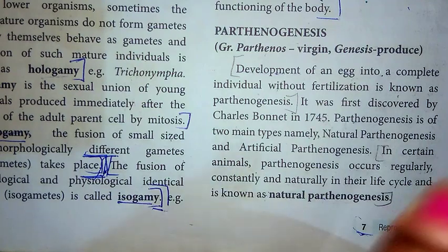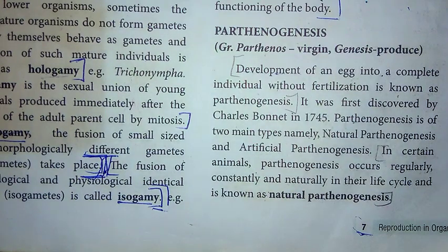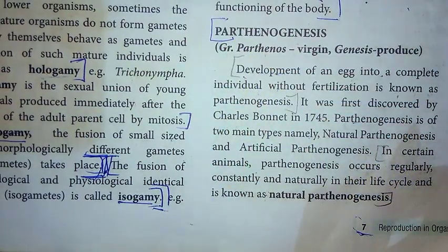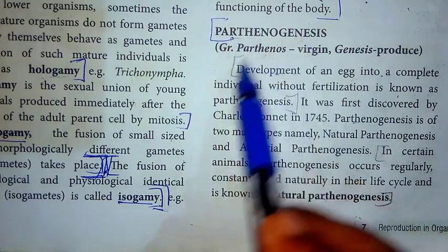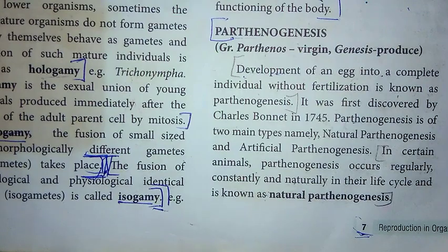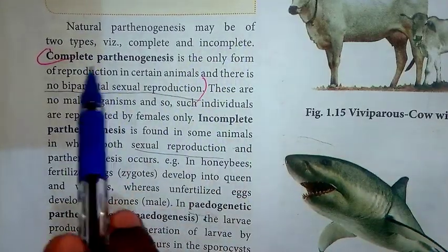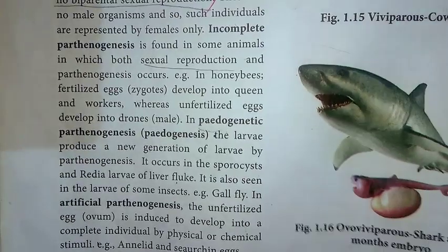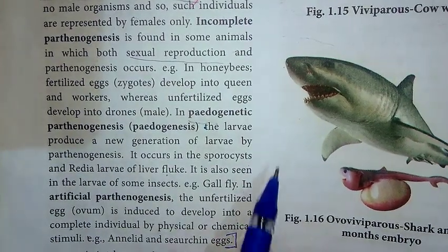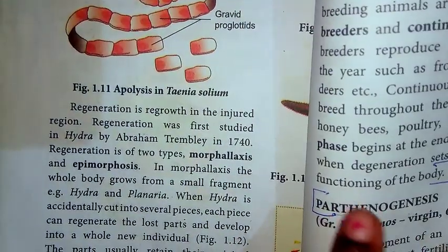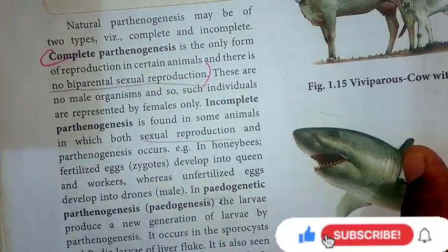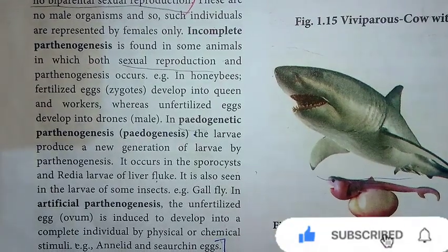For the second question — define parthenogenesis and describe the various types — the answer starts with the definition of parthenogenesis in page number seven. Natural parthenogenesis may be of two types: complete and incomplete. Continue writing through page number eight, finishing at annelid and sea urchin eggs.